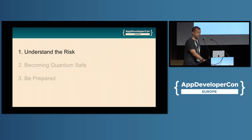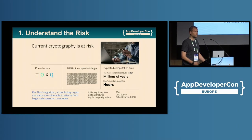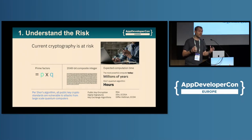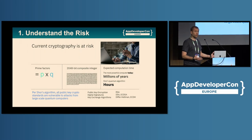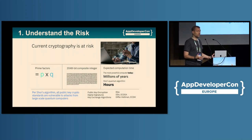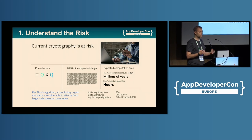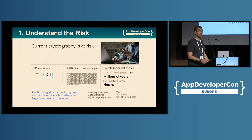First, understanding the risk. Our current cryptography is based around the idea that factoring large numbers is hard. It takes millions of years to factor a 2,000-digit number. But with powerful enough quantum computers, that takes hours. And so as a result, all of our public-key cryptography is vulnerable to attacks from large-scale quantum computers.